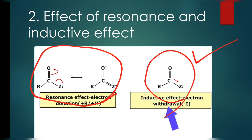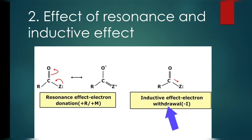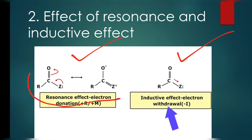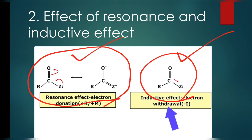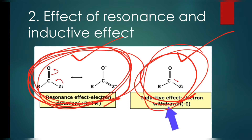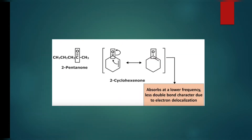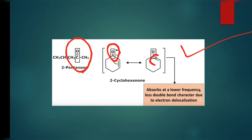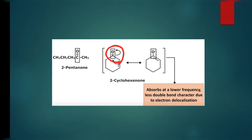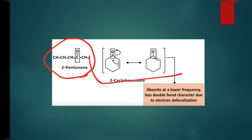Comparing pentanone and cyclohexanone: pentanone always retains its C=O double bond because there is no resonance, so its wave number is higher. In cyclohexanone, resonance causes the pi bond of the carbonyl to shift, decreasing the bond order. Therefore pentanone has a higher vibrational frequency than cyclohexanone.